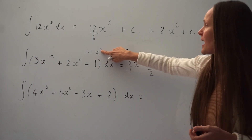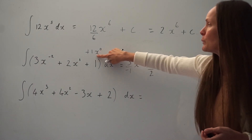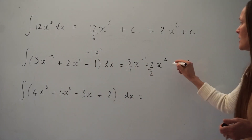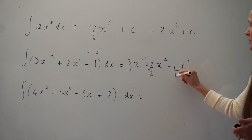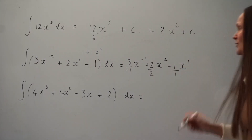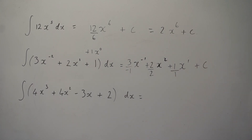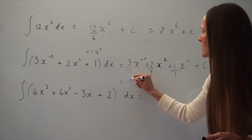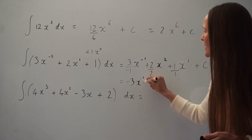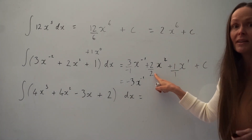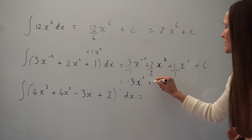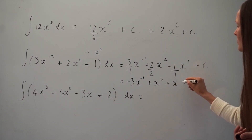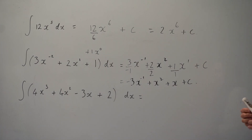Thinking of the constant term as x to the power of 0 makes it clearer: adding 1 to 0 gives a power of 1, so it becomes x to the power of 1, and you divide the number 1 by the new power of 1. Don't forget to add your constant c at the end. Simplifying: 3 divided by negative 1 is negative 3, giving negative 3x to the power of negative 1; 2 divided by 2 is 1, giving x squared; and 1 divided by 1 gives plus x, then plus c.